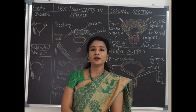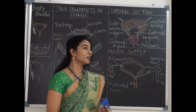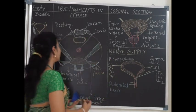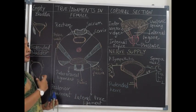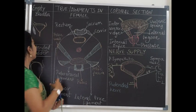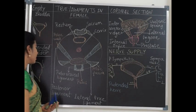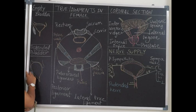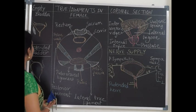Beginning with the urinary bladder — it is a muscular bag which acts like a reservoir for urine. When it is empty, it is tetrahedral in shape, and when it is filled or distended with urine, it takes up a fusiform shape.